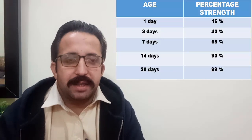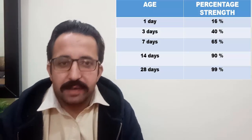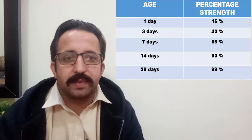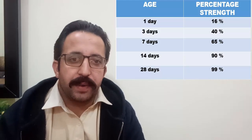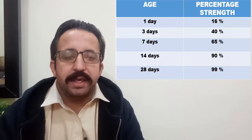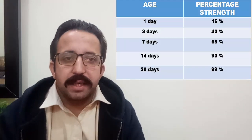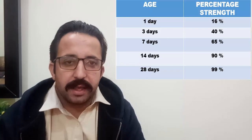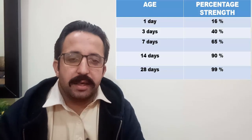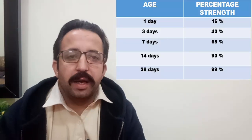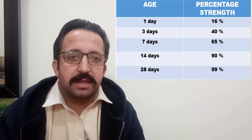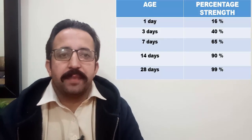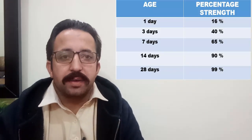The 3-day, 7-day, and 14-day strengths are used for different laboratory tests. As you can see, concrete initially gains strength at a faster rate, while with the passage of time the strength gaining process slows down.